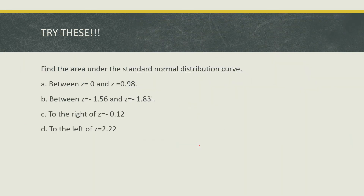Try this at home: find the area under the standard normal distribution curve for z equals 0 and z equals 0.98. Follow procedures one and two from the procedure table.